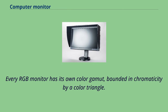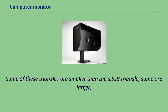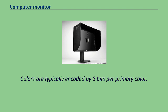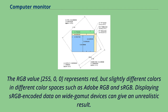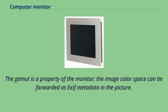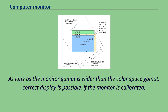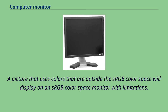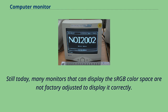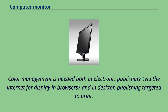Every RGB monitor has its own color gamut, bounded in chromaticity by a color triangle. Some of these triangles are smaller than the sRGB triangle, some are larger. Colors are typically encoded by 8 bits per primary color. The RGB value 255, 0, 0 represents red, but slightly different colors in different color spaces such as Adobe RGB and sRGB. Displaying sRGB encoded data on wide gamut devices can give an unrealistic result. The gamut is a property of the monitor; the image color space can be forwarded as EXIF metadata in the picture. As long as the monitor gamut is wider than the color space gamut, correct display is possible if the monitor is calibrated. Many monitors that can display the sRGB color space are not factory adjusted to display it correctly. Color management is needed both in electronic publishing and in desktop publishing targeted to print.